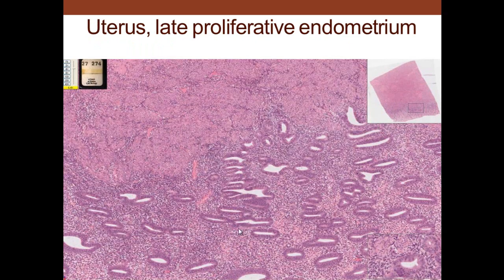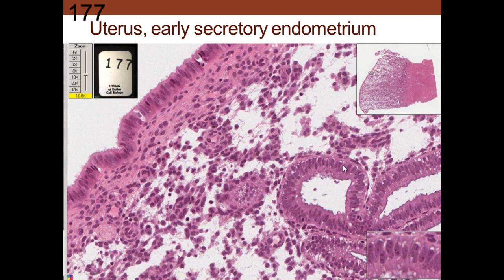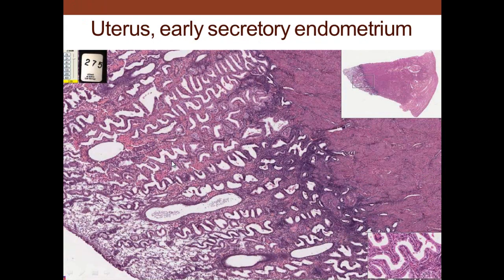In the late proliferative phase, the glands are pretty much developed and the functional layer is intact. In the early secretory phase, you can see spaces between the glands. At higher magnification in early secretory, there are glycogen secretions located below the nucleus; in late secretory they will be above the nucleus. Ciliated cells are visible on the surface of the uterus, and the glands are getting thicker with secretions.